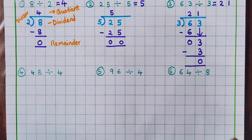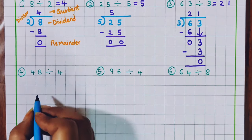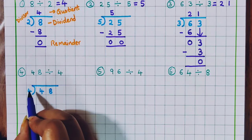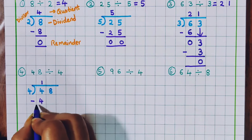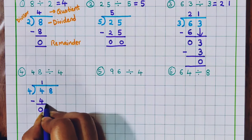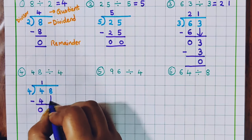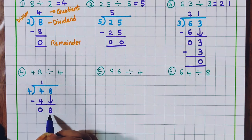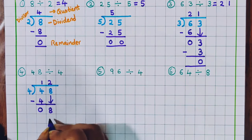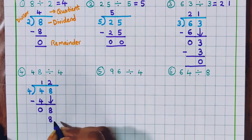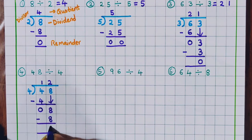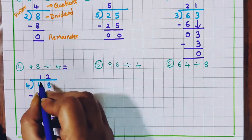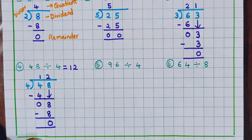Now let's do the next problem: 48 divided by 4. Is 4 divisible by 4? Yes, 4 ones are 4. Now we do minus and get 0. Beside this we have another number, 8, so we will bring 8 down. Is 8 divisible by 4? Yes, in the table of 4 we get 8 — 4 twos are 8. Now let's do minus and we get 0. The remainder is 0, so 48 divided by 4, the answer is 12.